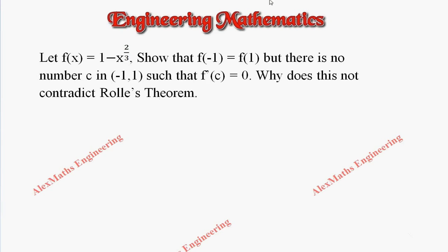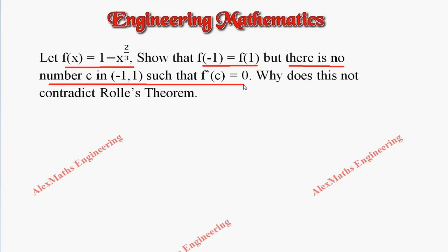Hi students, this is Alex here. In this problem, there is a function f of x which is 1 minus x power 2 by 3. We have to show f of minus 1 equal to f of 1, but there is no number c in the open interval minus 1 comma 1 such that f dash of c equal to 0. This is the first part.